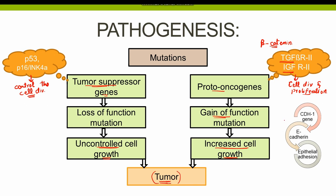In the infiltrative type of gastric adenocarcinoma, there is a mutation in the CDH1 gene, which encodes for a protein known as E-cadherin. E-cadherin is responsible for epithelial adhesions. As the mutation in CDH1 gene results in loss of these epithelial adhesions, the tumor cells in infiltrative type of adenocarcinoma are scattered and not forming any particular pattern.